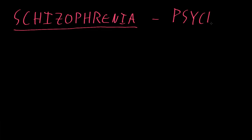Psychosis refers to some specific abnormalities of cognition, and often, characteristically, abnormal perceptions of reality. These may include hallucinations, which are sensory perceptions without actual stimuli — like hearing or seeing things that aren't actually there — or delusions, which are fixed false beliefs not explainable by a person's culture, like if someone has the idea that someone else is controlling their thoughts.